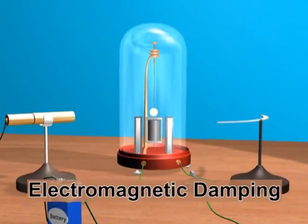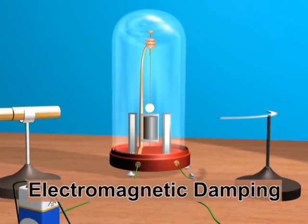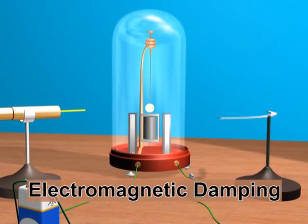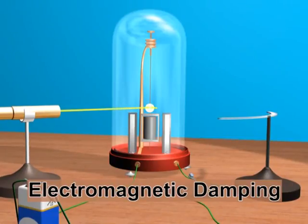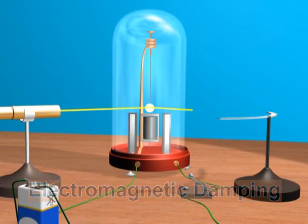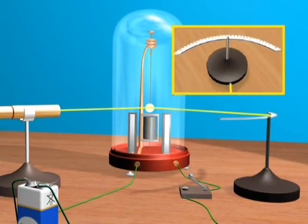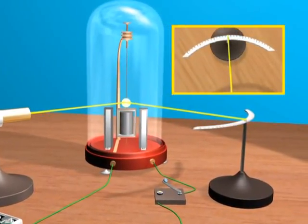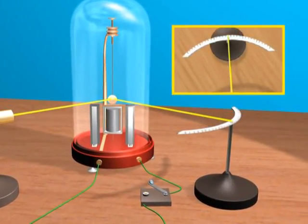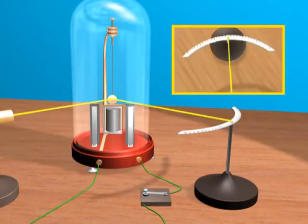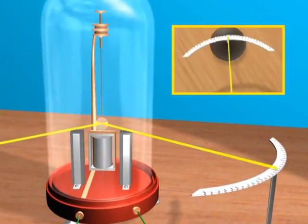Electromagnetic damping: The oscillations of a moving coil galvanometer take a long time to die out. The oscillations of the coil can also be stopped by short-circuiting the two ends of the coil through a tapping key. When the key is pressed, the coil circuit is closed.